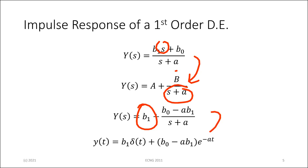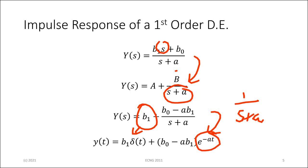So you do this and then you take the inverse transform. Any number in the Laplace S domain, when you translate that back into time, is going to give you an impulse. And something of the form one over S plus A gives you E to the minus A·T, with some coefficients in front.